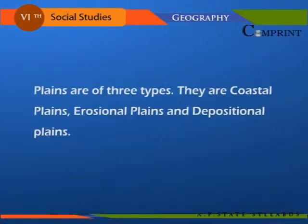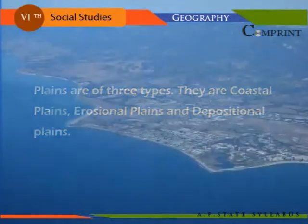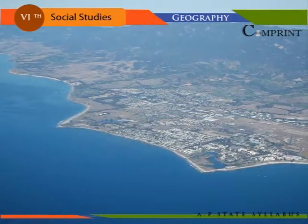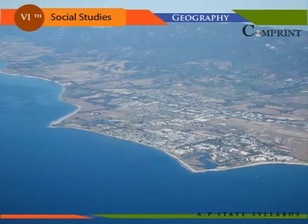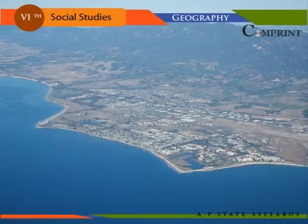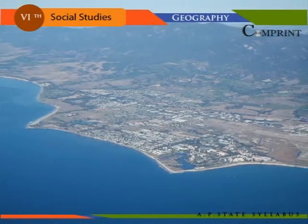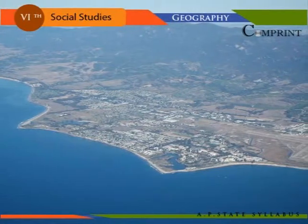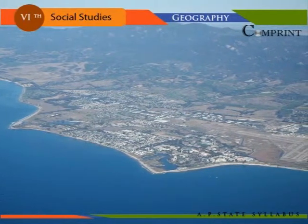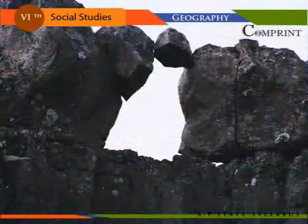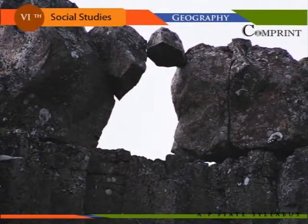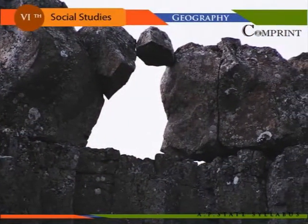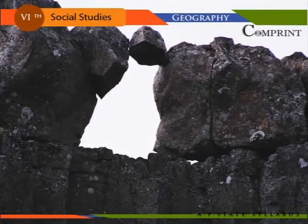Plains. Plains are of three types: coastal plains, erosional plains, and depositional plains. Plains having their level surface the same as the sea level are called coastal plains. The plains formed due to the erosional work of air, water, and glaciers, which cause high landforms to shrink, are known as erosional plains — for example, the Canadian Shield and the West Siberian Plain.